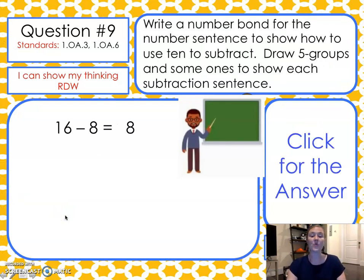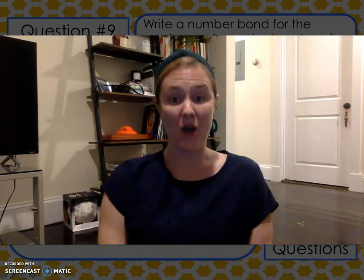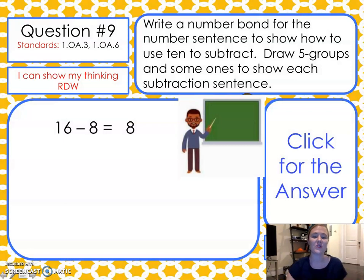Question number 9. Write a number bond for the number sentence to show how to use 10 to subtract. Draw five groups and some ones to show each subtraction sentence. Another way to say this is use your take from 10 strategy using the drawing to solve this. So, solve 16 take away 8, and they kind of solved it for you already, equals 8. I want you to draw a picture using your take from 10 strategy. We are going to break 16 up into 10 and 6, and then take the 8 away. If you need more time to draw, which I'm sure you probably will, I'm going a little bit fast. Pause now. Remember, this is a review of everything that we learned. We know this. Be patient with yourself, take a breath, and try your best.